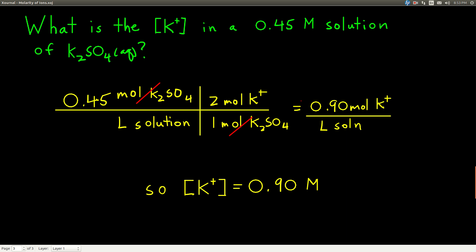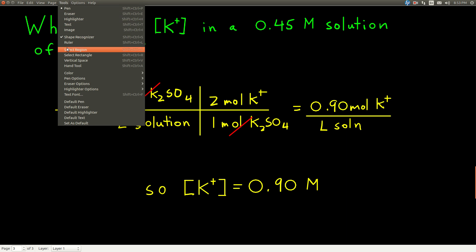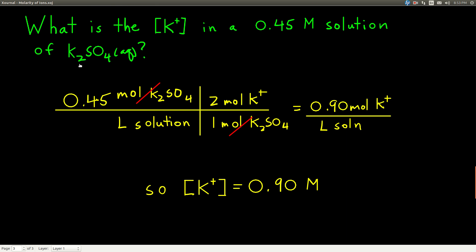But you don't really have to do all that. Once you realize how many of that particular ion there will be from that compound, in this case this 2 here tells us 2 potassiums, just multiply the concentration of the compound by that number. And we could say, for instance, what's the concentration of sulfate, SO4 2 minus? Well, see, there's only 1 sulfate, so it would be 0.45 molar in this solution.